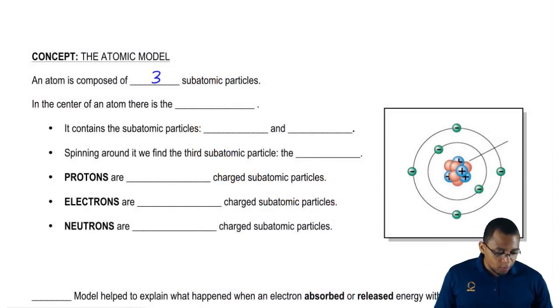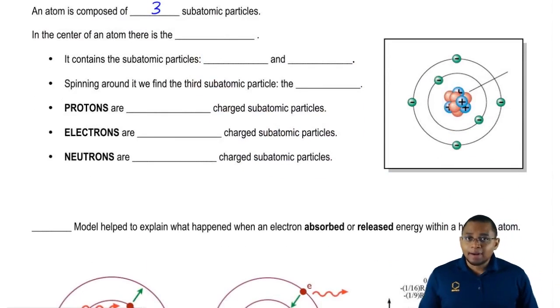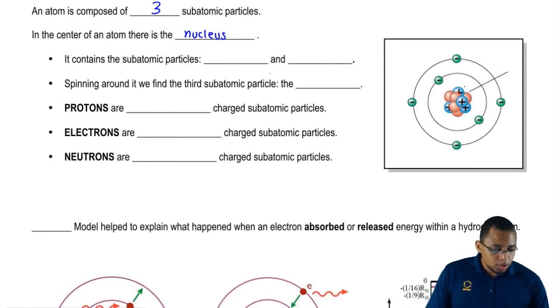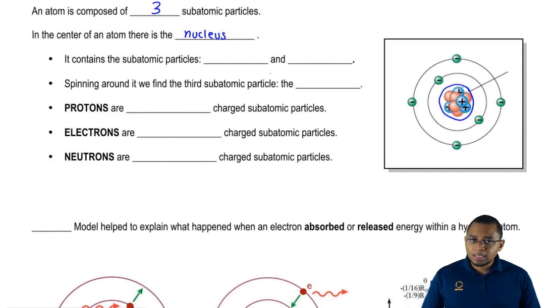On our right side, we have a picture of our atom, and in the center of an atom is where we find the nucleus. This right here represents our nucleus. It's not drawn exactly to scale - remember, the nucleus contains the majority of the mass of an atom, but the nucleus itself is very small compared to the rest of the atom.